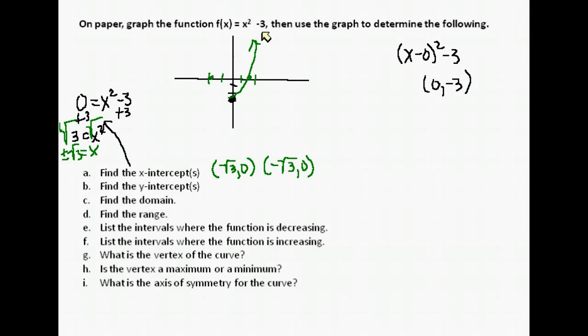Here is a sketch of the graph. For the y-intercept, you put 0 in for x and find y. We can see on the graph that our y-intercept is at (0, -3). If you plug in x = 0: 0 squared is 0, minus 3 is -3. So our y-intercept is at (0, -3).